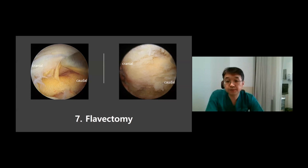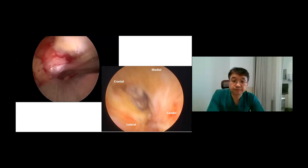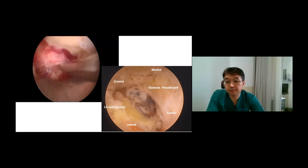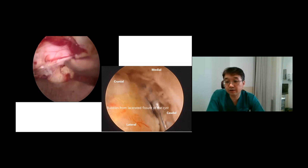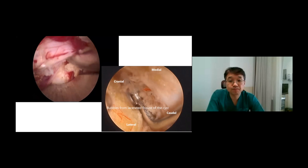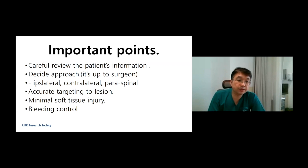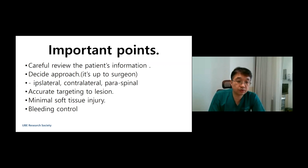The last step is foraminotomy. Split and remove is the basic concept. After this step, we can meet the nerve and disc region. The left video shows the interlaminar approach and disc removal. The right video shows extraforaminal air-containing cyst removal. Important points are: careful review of the patient's information, deciding the approach based on the surgeon's choice, accurate targeting for two reasons — minimal soft tissue injury and bleeding control. That is the basic concept of UBE technique.